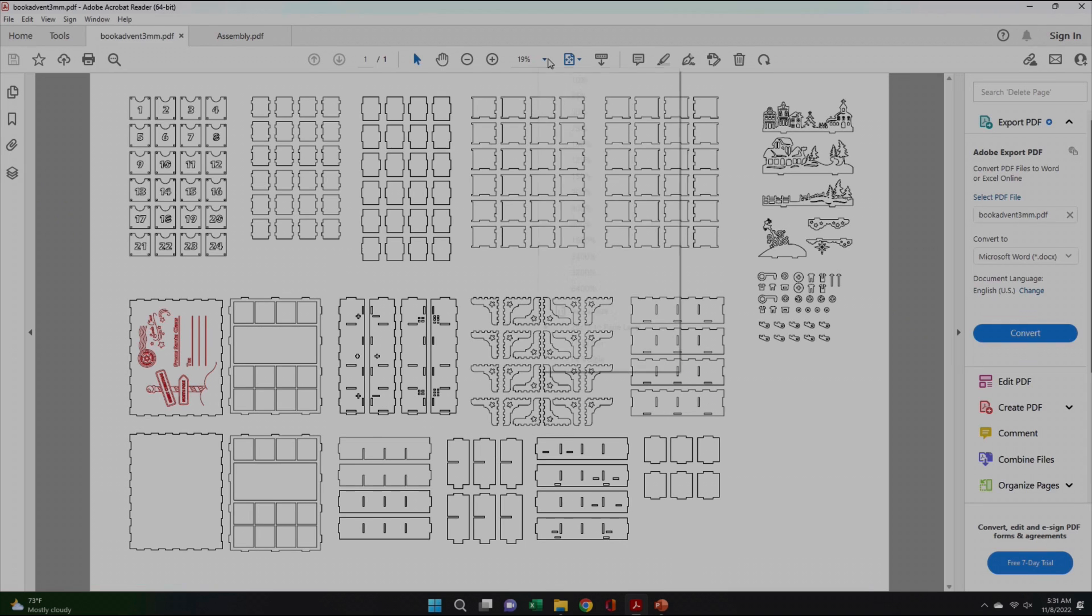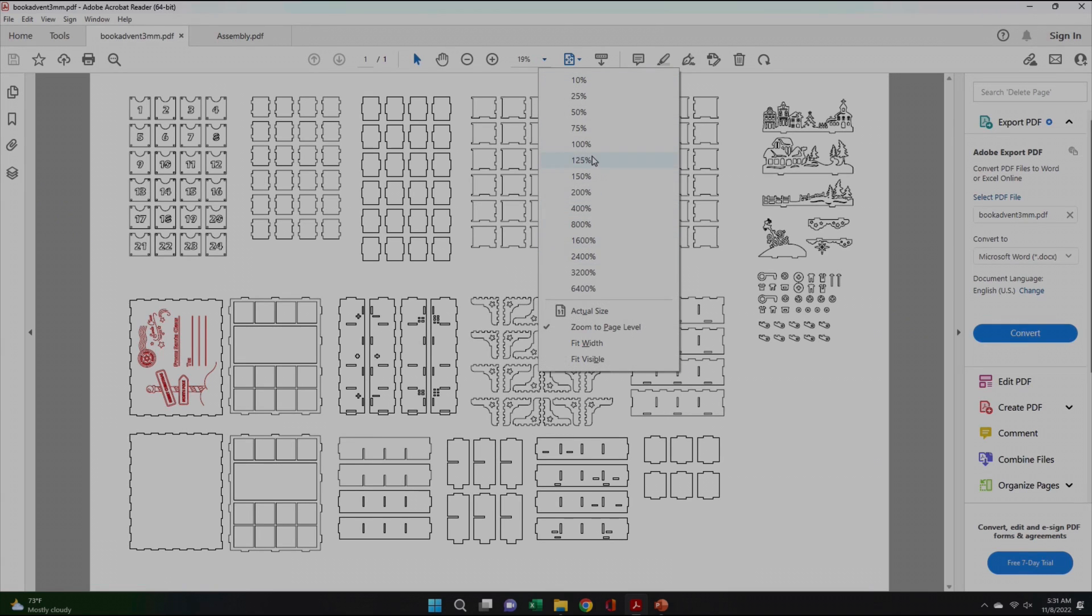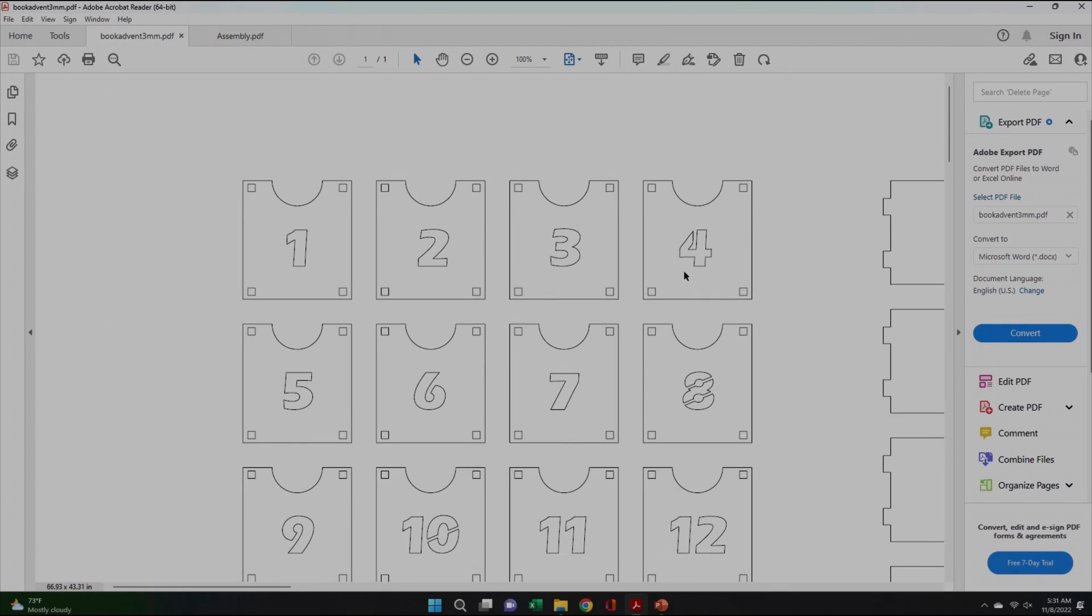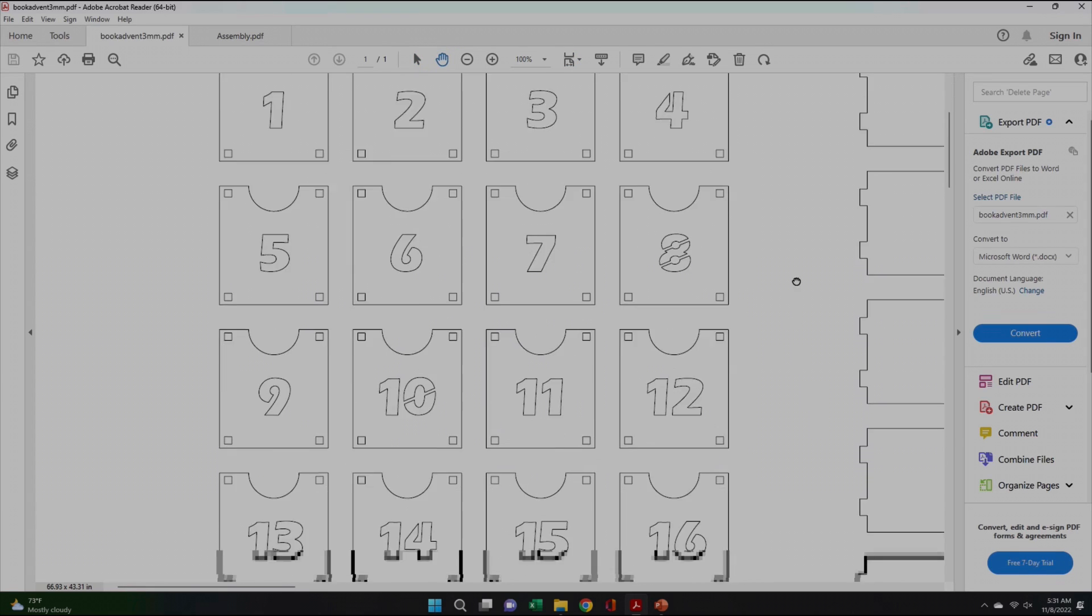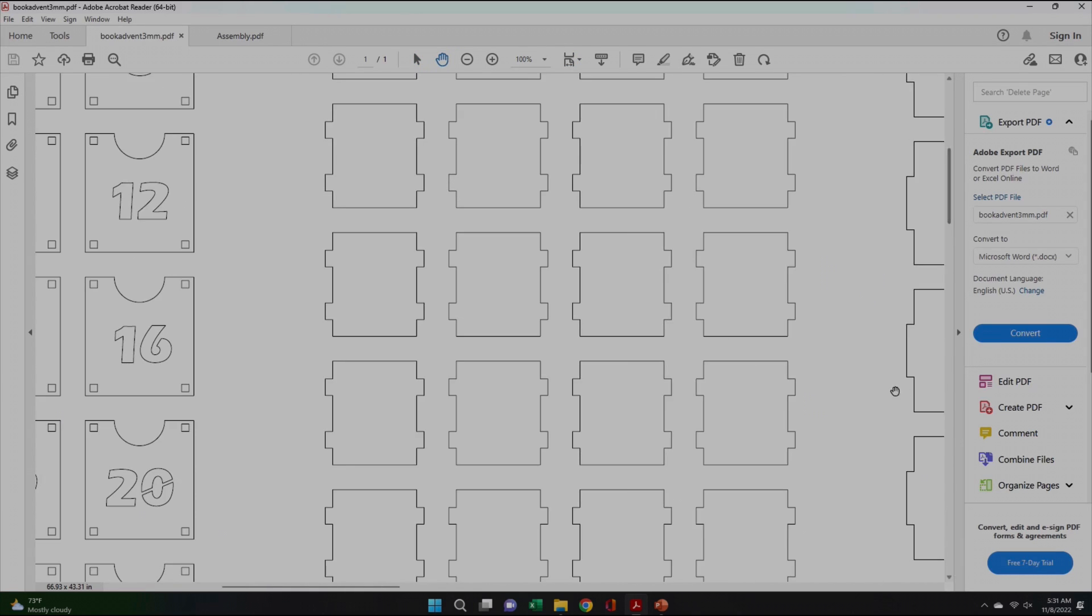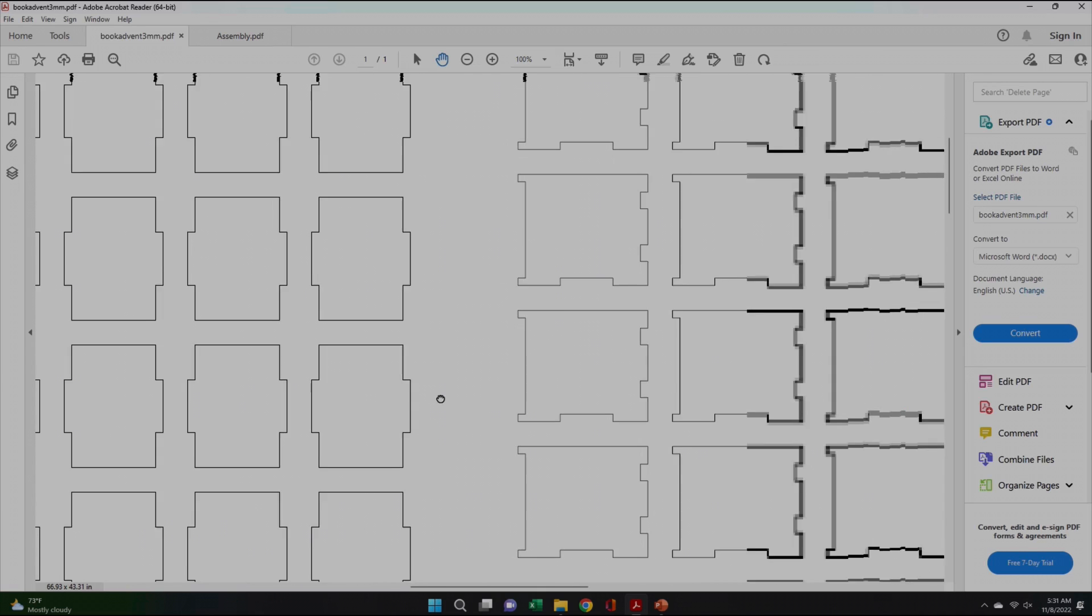I purchased a download which included several different file types and for different material thicknesses. Because I'm going to cut this using Lightburn, I wasn't able to use most of the file types that came with the download, but it did include a PDF which I was able to import and use.